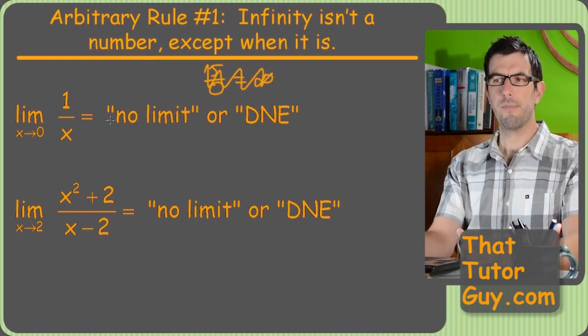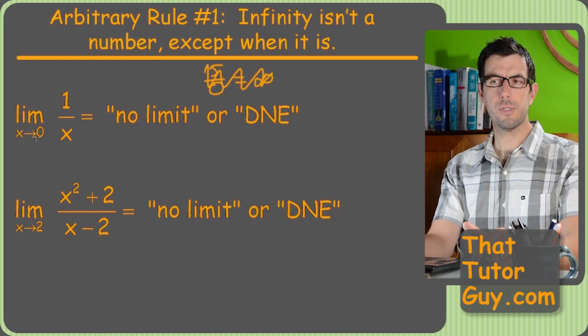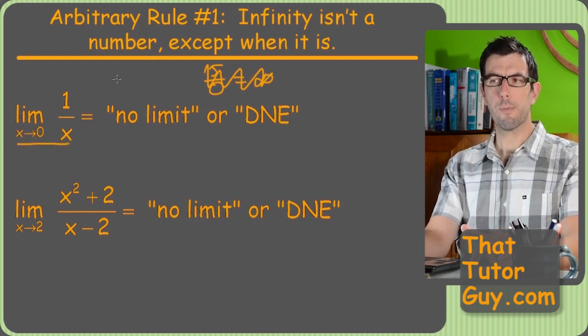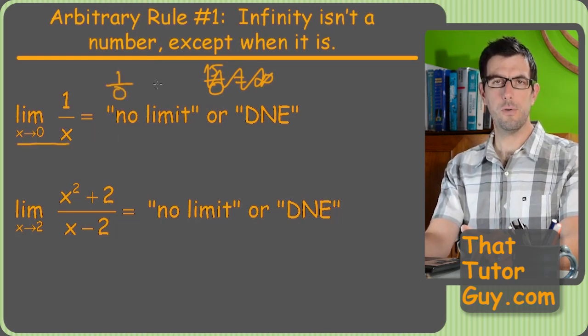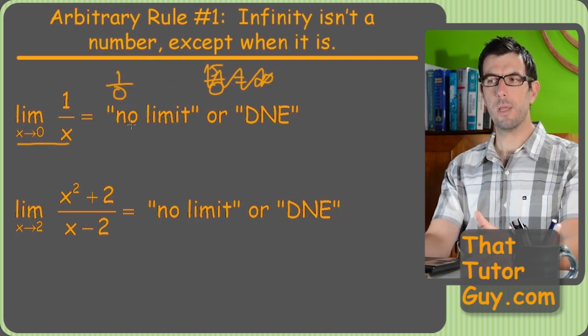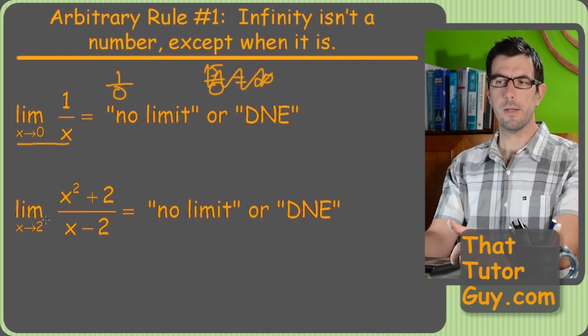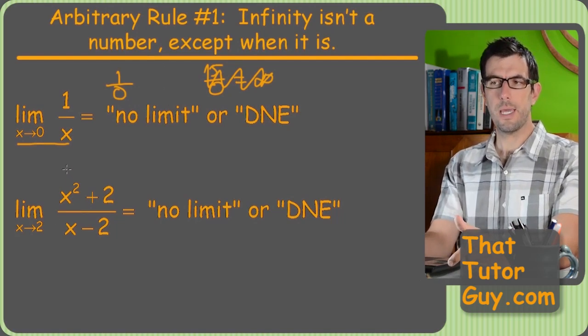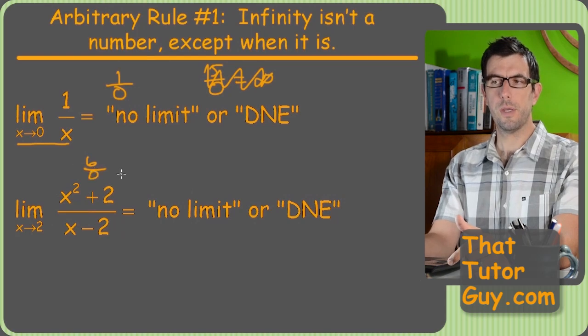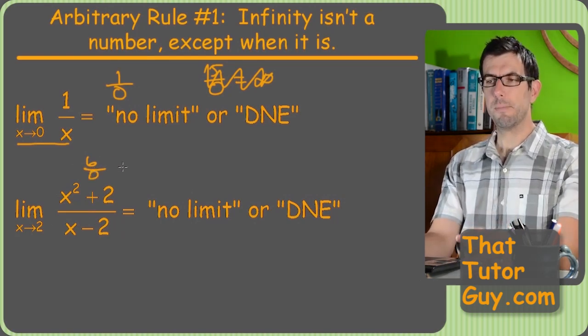So infinity is not a number. If you ever get something like limit as x approaches zero of one over x, where you're pretty much going to be getting one over zero, you're not going to write down infinity. You're going to write down no limit or does not exist. Same thing here: plug in two for these guys and we get four plus two is six over two minus two is zero. So once again, six over zero undefined. But if you're talking about the limit, it does not exist. It's not infinity.